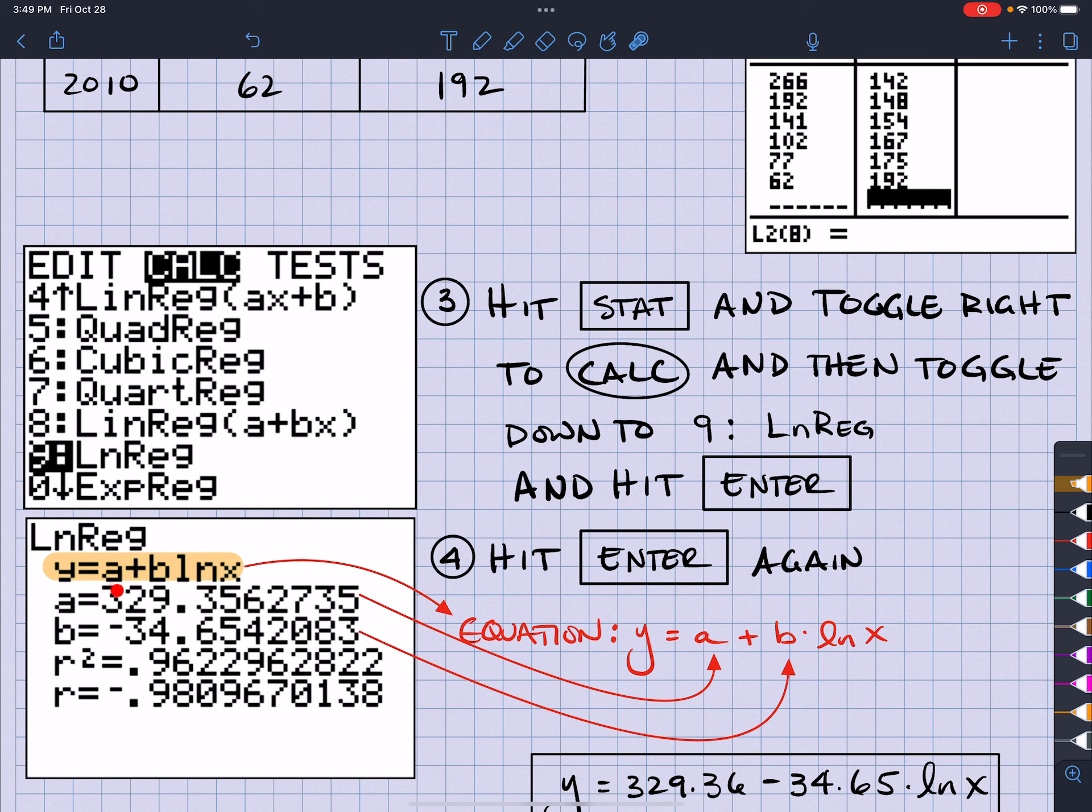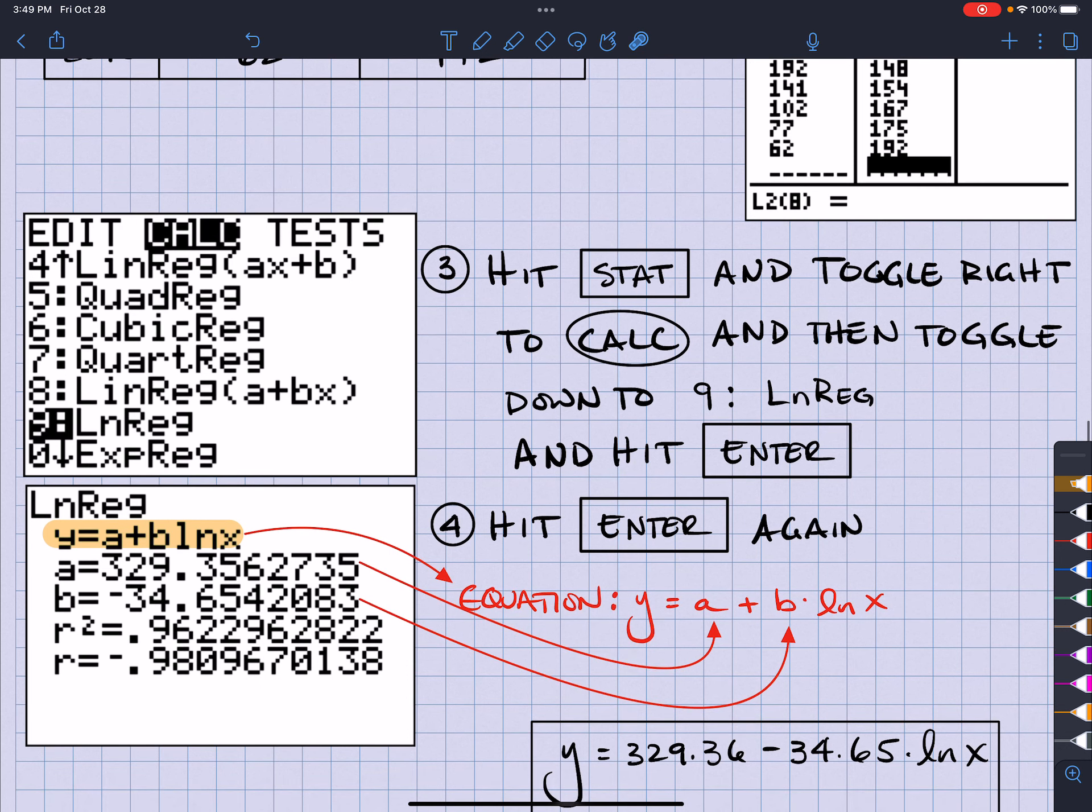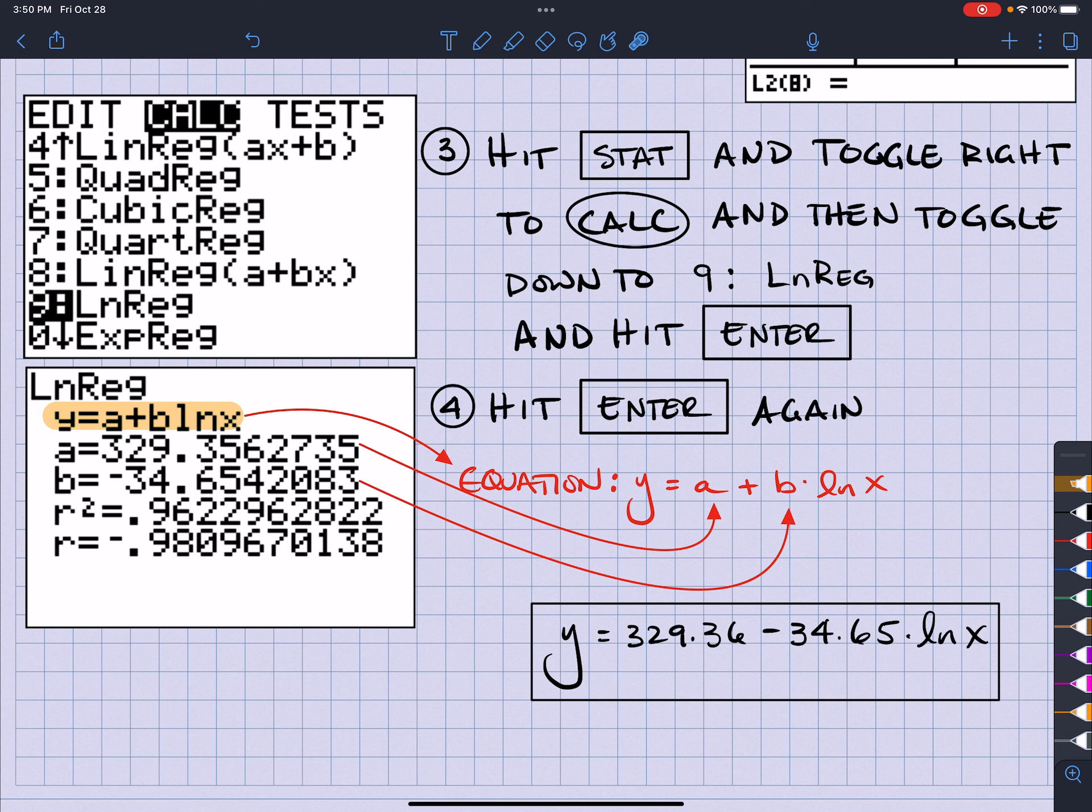And it's going to give me the value for A and the value for B and tell me how good that line fits. Okay. It didn't fit as well as the exponential model. However, this is pretty darn good still. All right. So, there's my A and B that I would just plug into my equation. And there's the equation of my logarithmic regression.